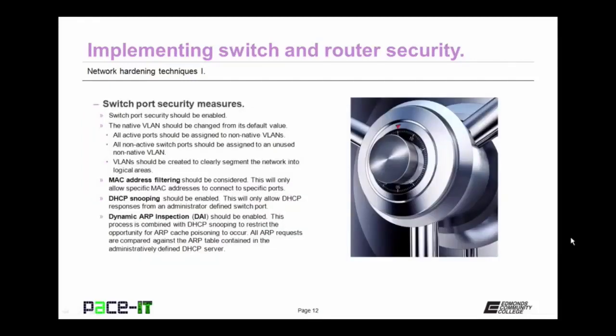Under implementing switch security measures, switch port security is vital. Switch port security should be enabled on all enterprise switches, as all are capable of having security measures enabled at the port level. Also, the native VLAN should be changed from its default value. All active ports should be assigned to non-native VLANs, and all non-active switch ports should be assigned to an unused non-native VLAN. VLANs should be created to clearly segment the network into logical, secure areas. A switch port security measure that should be considered is MAC address filtering — this will only allow specific MAC addresses to connect to specific ports.